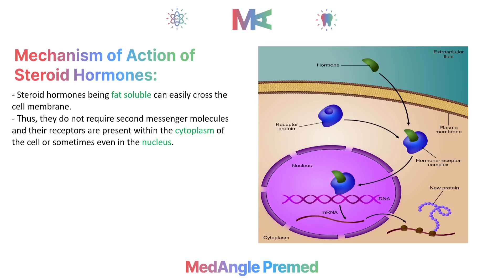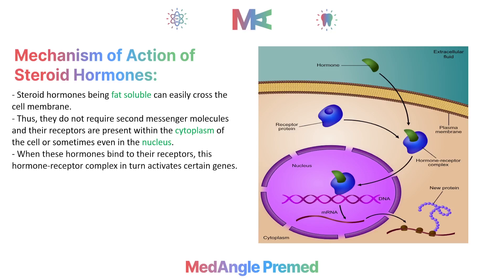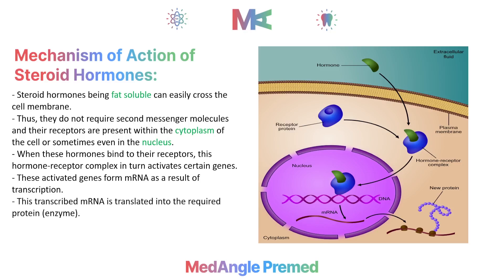Since steroid hormones can diffuse into the cell, their receptors are located within the cell. Once inside, the hormone binds to its receptor, forming a hormone-receptor complex. This complex activates certain genes, triggering transcription and producing an mRNA molecule. The mRNA moves to the cytoplasm, attaches to ribosomes, and undergoes translation to produce a new protein or enzyme that performs different functions in the cell.